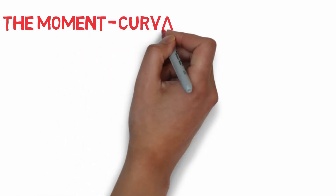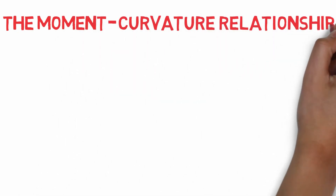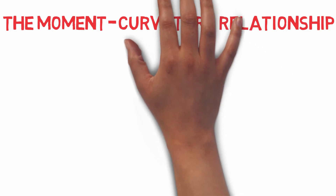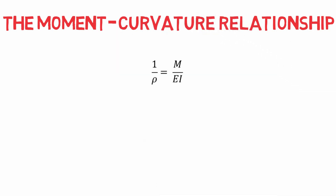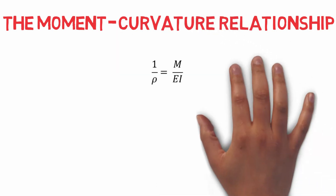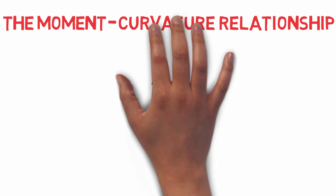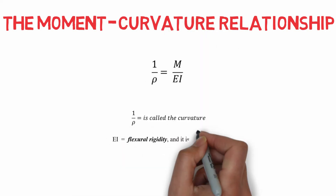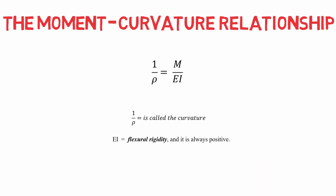In previous videos, we developed an important relationship between the internal moment, the radius of curvature rho, the modulus of elasticity E, and the moment of inertia I, as follows: 1 over rho equals M over EI. Here, 1 over rho is called the curvature, and the product EI is called the flexural rigidity, which is always positive.